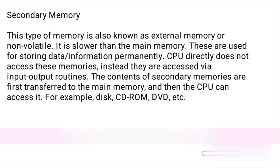Secondary memory. This type of memory is also known as external memory or non-volatile. It is slower than the main memory. These are used for storing data and information permanently. CPU directly does not access these memories; instead, they are accessed via input-output routines. The content of secondary memories are first transferred to the main memory and then the CPU can access it.